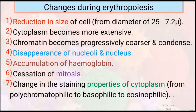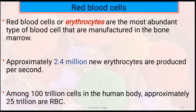Changes that occur in erythropoiesis include: reduction in the size of the cell; cytoplasm becomes more extensive and chromatin becomes progressively coarsened and condensed; disappearance of nucleoli and nucleus; accumulation of hemoglobin; cessation of mitosis; and changes in the staining property of cytoplasm — from polychromatic to basophilic to eosinophilic. Red blood cells are the most abundant type of blood cells manufactured in the bone marrow. Approximately 2.4 million new erythrocytes are produced per second, and among the 100 trillion cells in the human body, approximately 25 trillion cells are red blood cells.